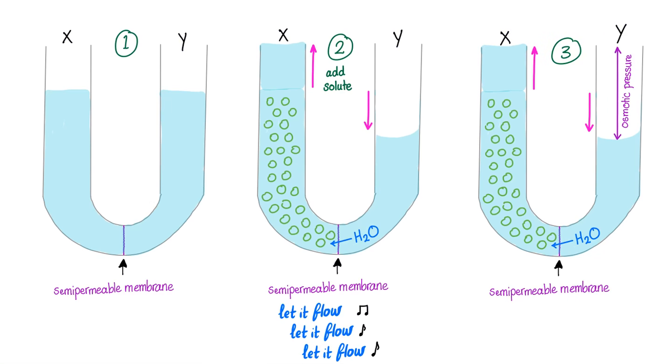So, let's perform a fifth grade experiment. Okay, bring a U-shaped tube and fill it with water, knowing that there is a semi-permeable membrane between the two compartments. Step number two, add a solute to compartment X only. Step three, notice what will happen. Water is going to flow from the area of low concentration of solute to the area of high concentration of solute. So, the end result is here.